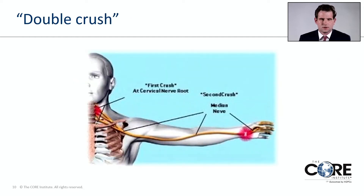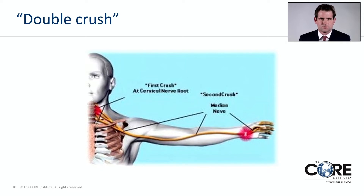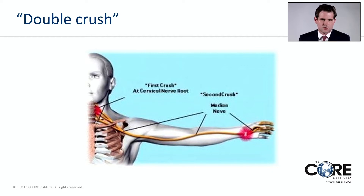There is a phenomenon called double crush, where nerves can be compressed in multiple areas. For example, one can have a pinched nerve as it exits the spine, and then that same nerve can also be compressed at the wrist. This is important in treatment because if you treat only the carpal tunnel or the pinched nerve at the wrist, it will not alleviate all symptoms if there is also compression at another location.